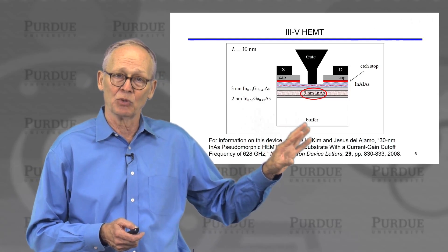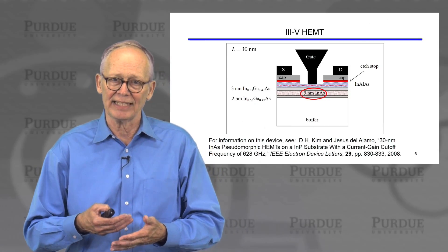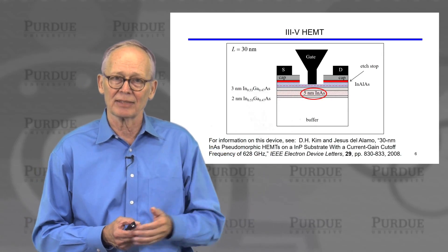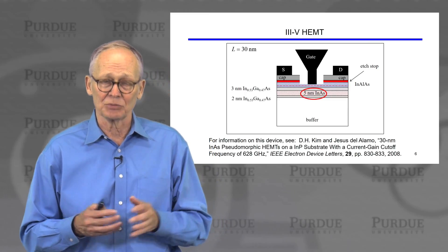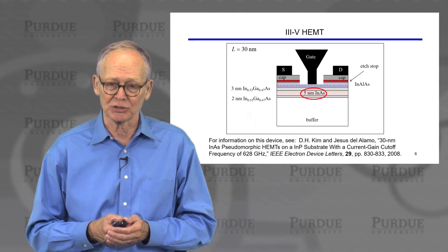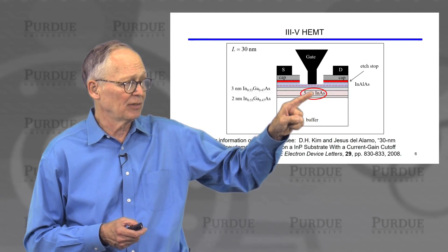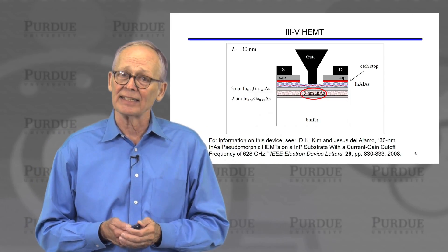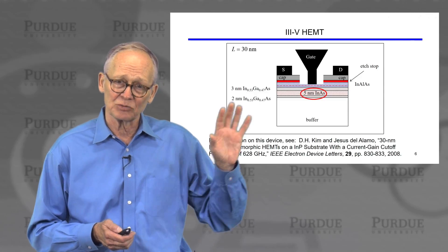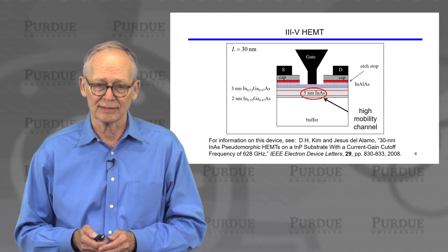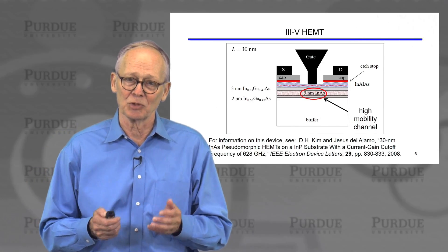The key difference of the HEMT is that we don't have an insulator between the gate and the channel. Instead, we have wide bandgap semiconductors and we modulate the gate charge with a reverse-biased Schottky barrier junction, not with a MOS structure. But it's very similar in terms of its operation as a barrier-controlled device. The channel itself is a region of indium arsenide. Indium arsenide in the bulk displays very high electron mobilities — that's what makes these transistors of interest. We call this a high-mobility channel.